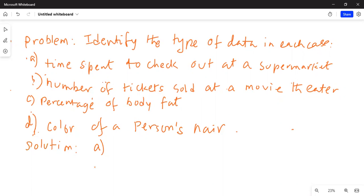So it can be like 10.5 minutes, which means 10 minutes and 30 seconds. So this is continuous. This is quantitative data and continuous.